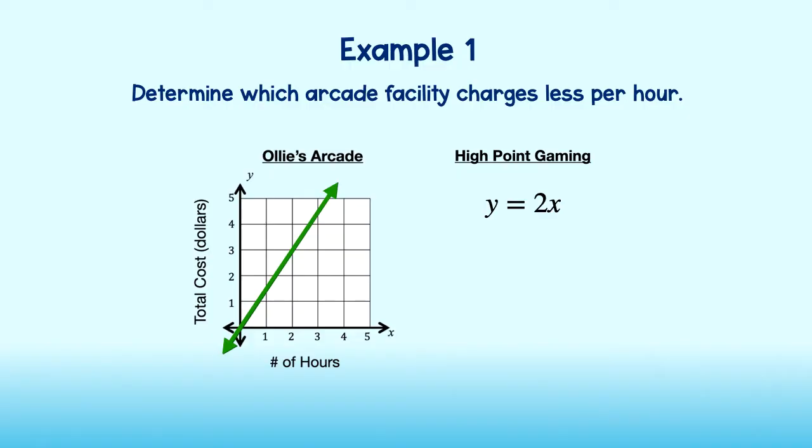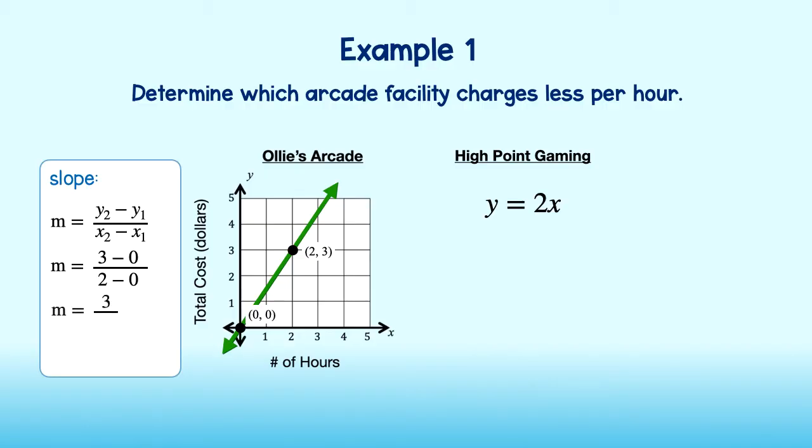We can find the slope of a graph a couple of different ways, but I will use the formula y2 minus y1 over x2 minus x1. I see that 0,0 and 2,3 are points on my graph, so I will plug these into my formula. 3 minus 0 is 3, and 2 minus 0 is 2. 3 divided by 2 is 1.5.